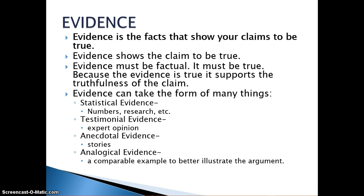And finally, the last type and perhaps the weakest is analogical evidence. Analogical evidence rarely stands on its own. It's where we make a comparison in order to help illustrate the argument for the listener better. For example, we could say Mr. Jernigan is the Chris Farley of teaching — which would be good, but in and of itself is far too opinionated to stand on its own. If we could substantiate it with other pieces of evidence that support our claim, then we have a greater chance of proving our argument and having it stick.